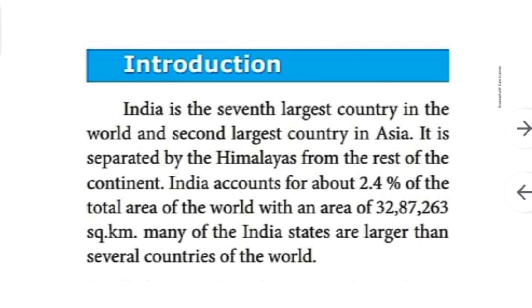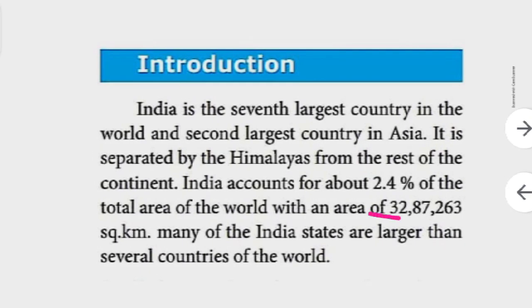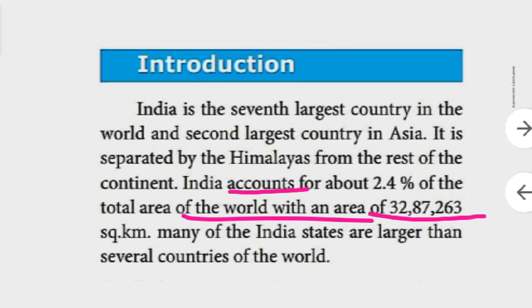The total area of the world is 32 lakh 87,263 square kilometers. From that, India covers only 2.4 percentage of the total area of the world. India now has 28 states plus 8 union territories. Many of the Indian states are larger than several countries of the world.